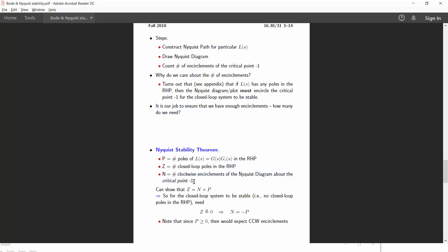And let us say that N is the number of clockwise encirclements of the Nyquist diagram about the critical point minus 1. And then we define a term Z, which is the number of closed loop poles in the right hand side of the plane.